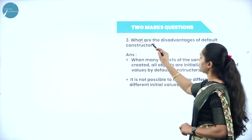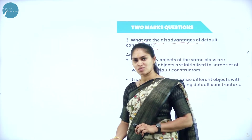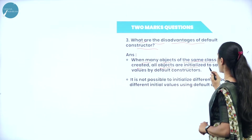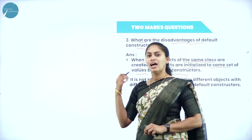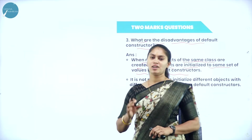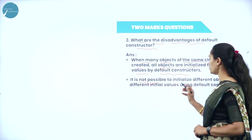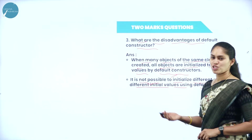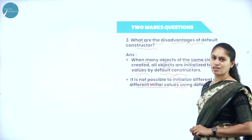Next, we will see what are the disadvantages of default constructor. A constructor which does not accept any parameter is considered as a default constructor. The disadvantage is that when many objects of the same class are created, all the objects are initialized to the same set of values by the default constructor. If you are creating 50 objects for a particular class, all 50 objects will be initialized to the same value. It is not possible to initialize different objects with different initial values using the default constructor.